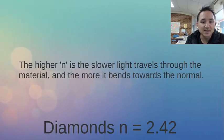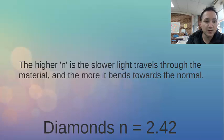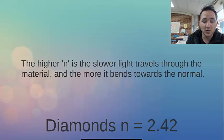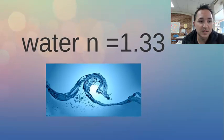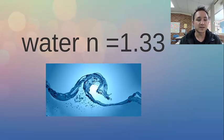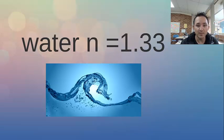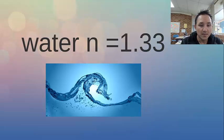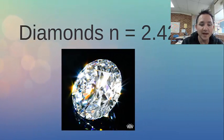Now, the higher N is, the slower light travels through the material, and also the more that it bends towards the normal. So looking at different materials, water, for example, has a refractive index of 1.33. So compare that to air. It's going to be denser than air, and light's going to bend more in water. If we compare that to diamond...